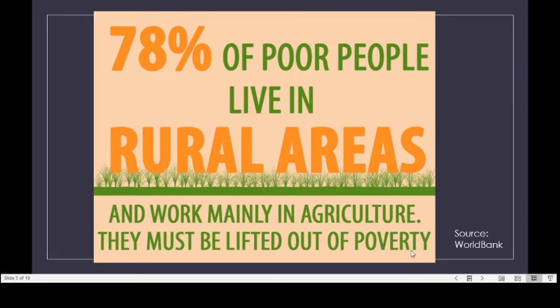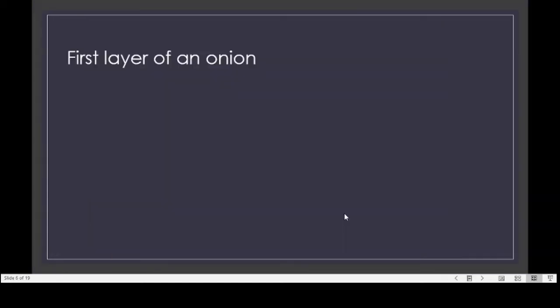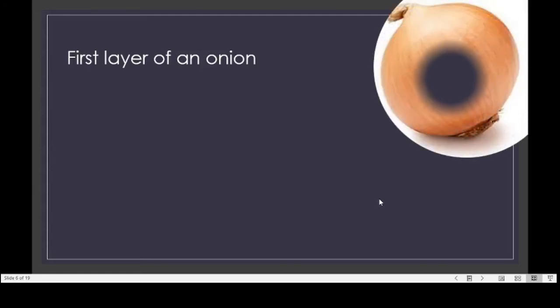This slide from the World Bank website tells us that 78% of poor people live in rural areas and work mainly in agriculture. I mentioned that rural poverty has multiple layers, so I would like to use an onion as a metaphor here.